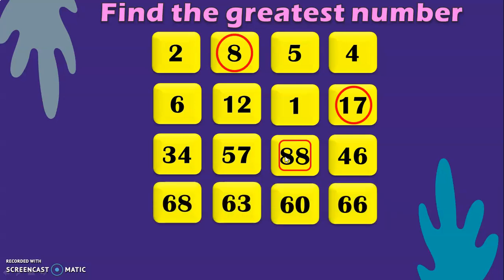Next we have: 68, 63, 60, and 66. Notice that we have the same digit, 6, in the tens place for all four numbers. Applying the third rule, compare the ones place: we have 8, 3, 0, and 6. Among these, 8 is the greatest. With that, we can conclude that 68 is the greatest number in this series.